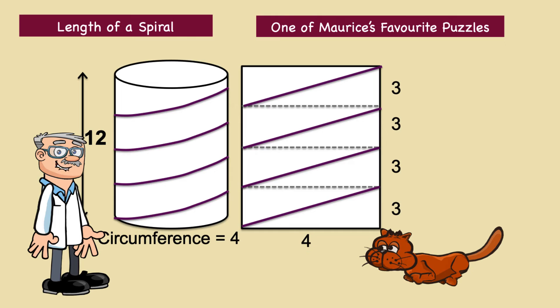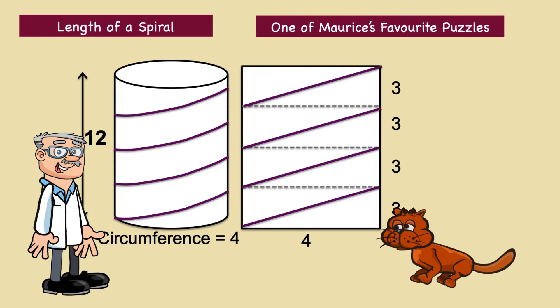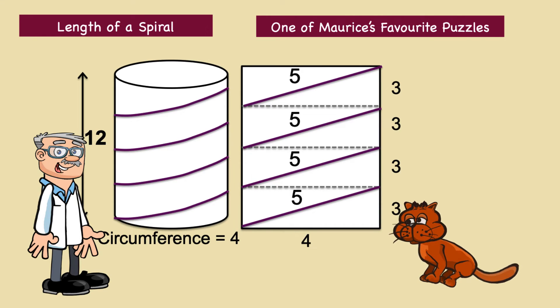And the height of each triangle is the height of the cylinder divided by 4, which gives 3. So each triangle is a 3-4-5 right triangle, and the hypotenuse of each is 5. The total string length is 4 times as long as a single triangle's hypotenuse, so the answer is 20.